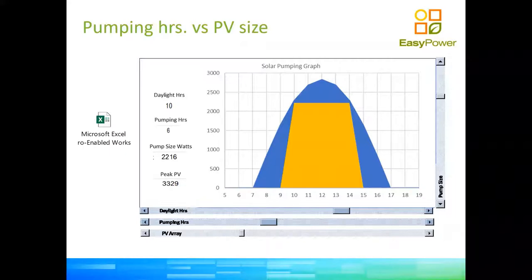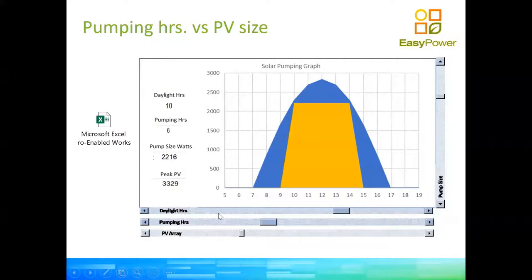Some models of VSDs have an AC couple, so you can run directly from the solar panels. If there are cloudy days and you want to run off AC, you can connect a generator or connect your single phase or three phase municipal supply directly to the VSD. That feature is only available on some models.